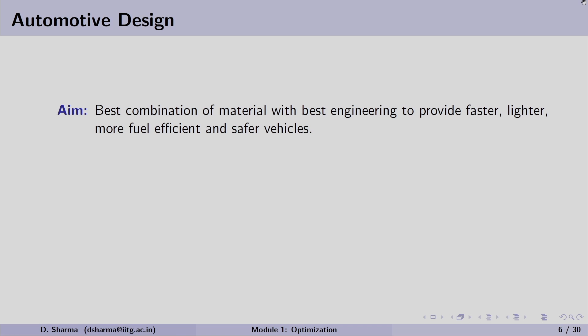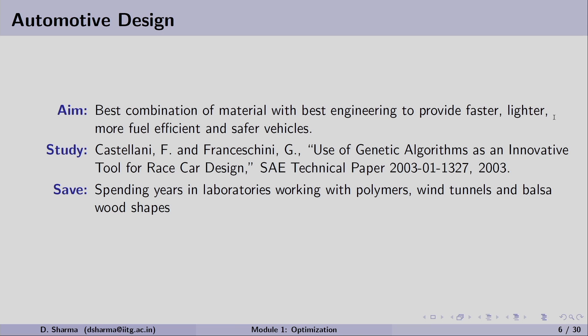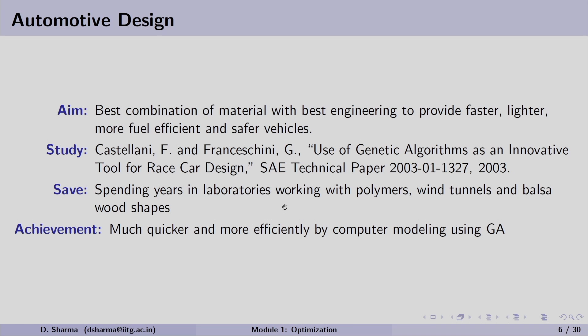Let us move towards the scope of optimization. In automotive design, the aim was to find the best combination of material with the best engineering to provide faster, lighter, more fuel-efficient, and safer vehicles. Scientists and researchers used genetic algorithms with available models to optimize car design. They found that using evolutionary computation techniques, they can save many years of laboratory work with polymers, wind tunnels, and other equipment to find the optimal design for a racing car.